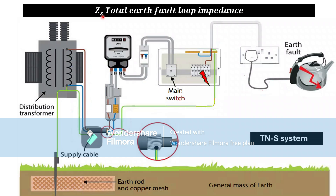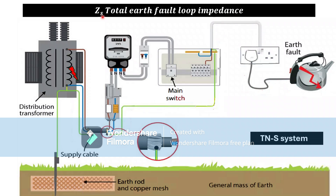For each type and rating of socket, there are different Zs values in the 18th Edition book. Our measured Zs values, measured in ohms, need to comply — they must be as low as possible. For example, for a B32 breaker, the book states 1.37 ohms, so when we measure Zs it should be below 1.37 ohms, meaning it is complying and our breaker will trip on time.